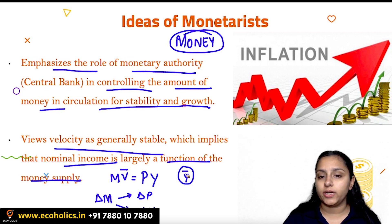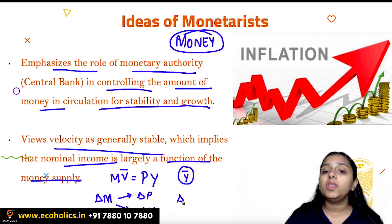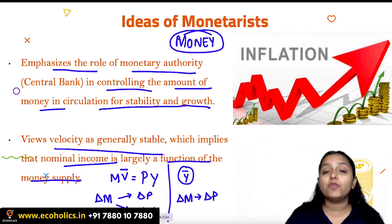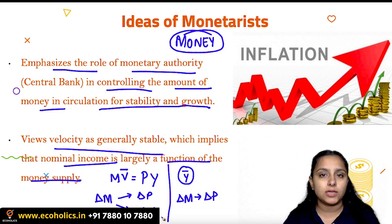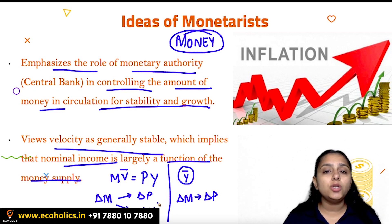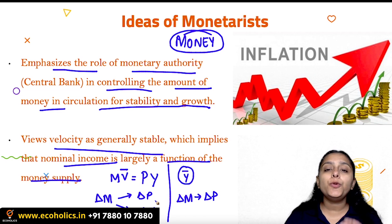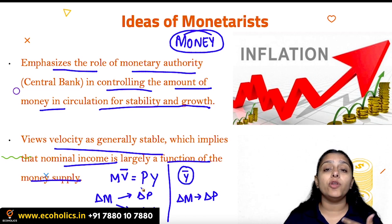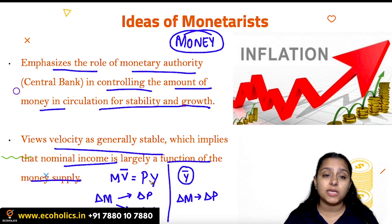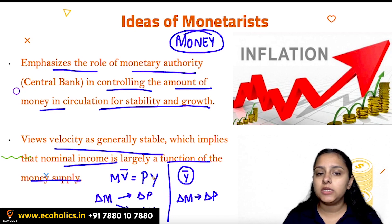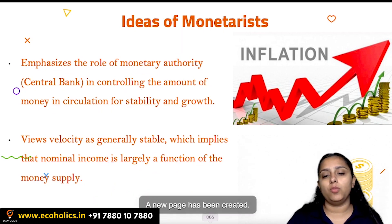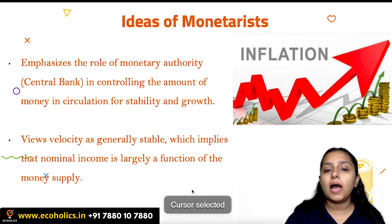Unlike Classicals, who believed output was also constant — so a change in money supply only changed prices — monetarists say output is not constant and can fluctuate. Because velocity is stable, changes in money supply can affect nominal income, which is the main idea of monetarism.